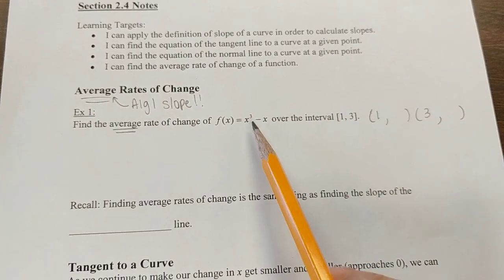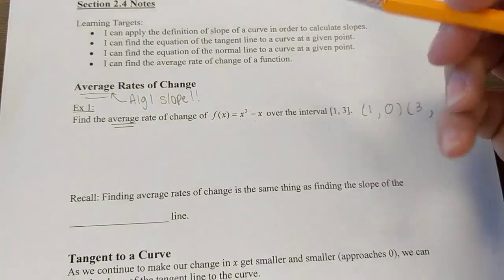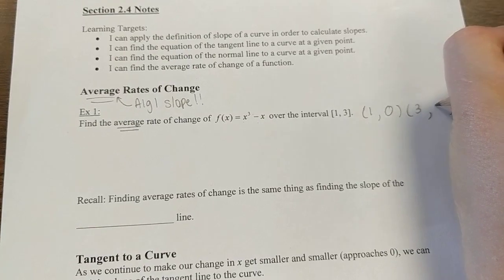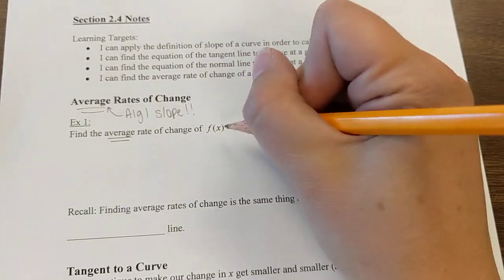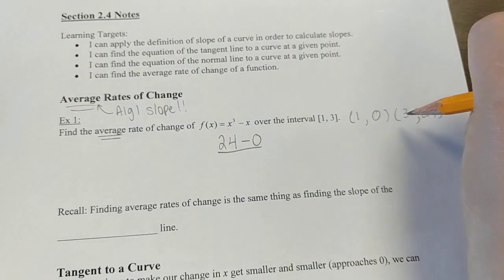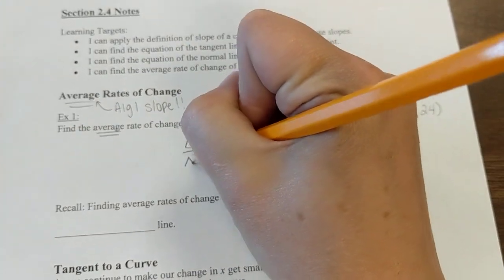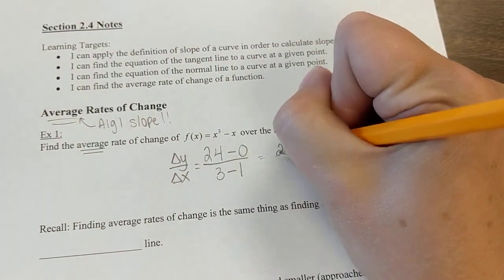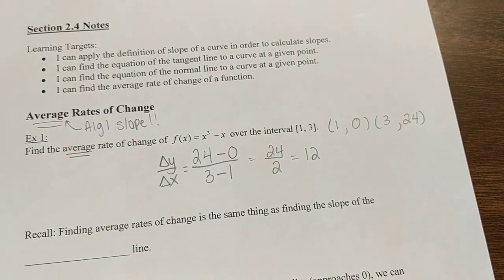Plug in 1: 1 cubed minus 1 is 0. Then plug in 3: 3 to the 3rd is 27, minus 3 is 24. Then we do average rate of change, so 24 minus 0 over 3 minus 1. We're talking change in y over change in x. We get 24 over 2, or average rate of change of 12.